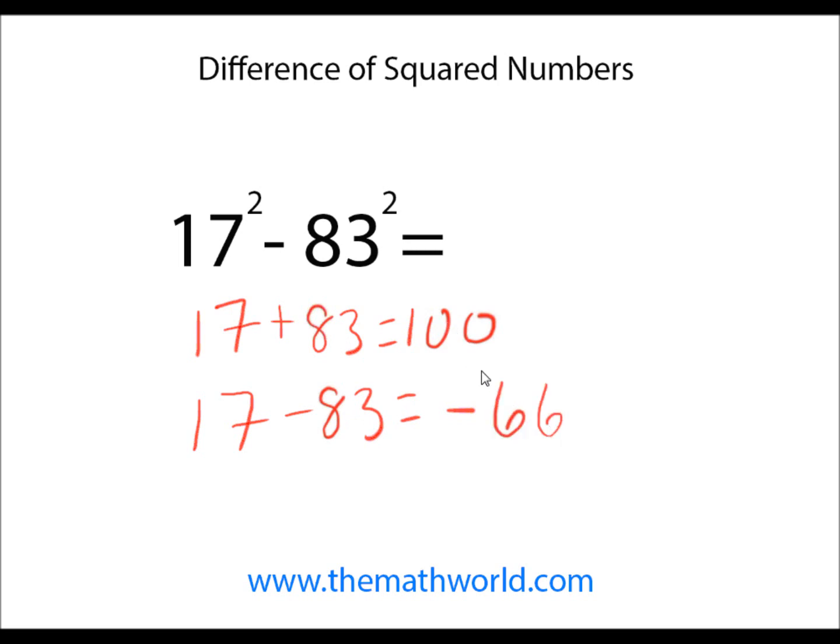So when we multiply 100 by minus 66, we get minus 6,600, which is our answer. 17 squared minus 83 squared is minus 6,600.